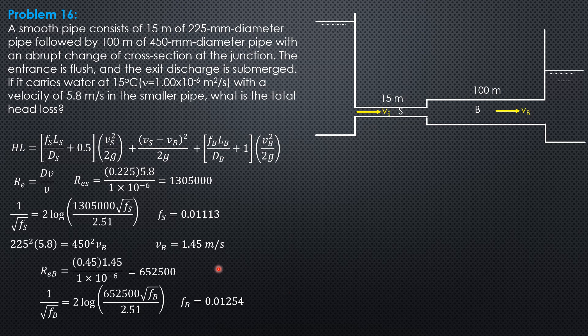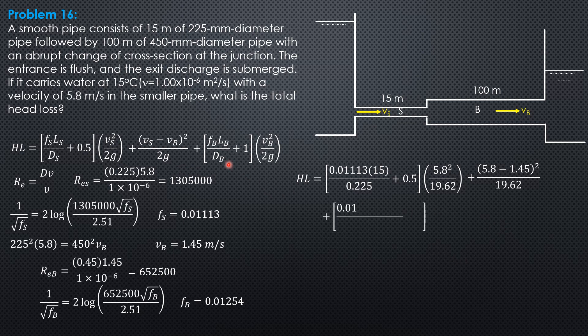Then everything is computed. Let's input the results here. Head loss equals 0.01113, length of smaller pipe 15, diameter 0.225, plus 0.5 of 5.8 squared over 19.62, plus quantity 5.8 minus 1.45 quantity squared over 19.62, plus quantity 0.01254 times 100 over 0.45 plus 1, times 1.45 squared over 19.62.